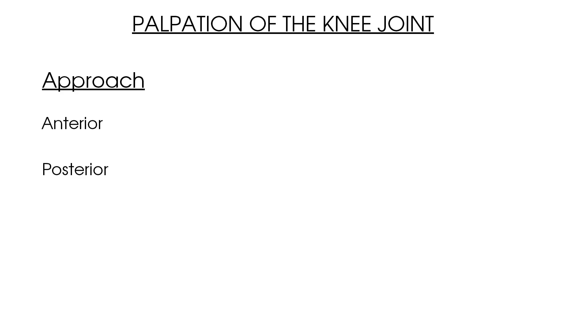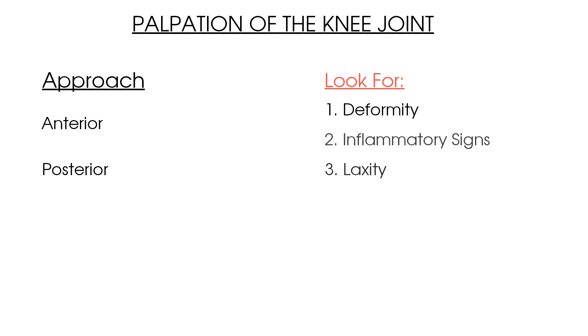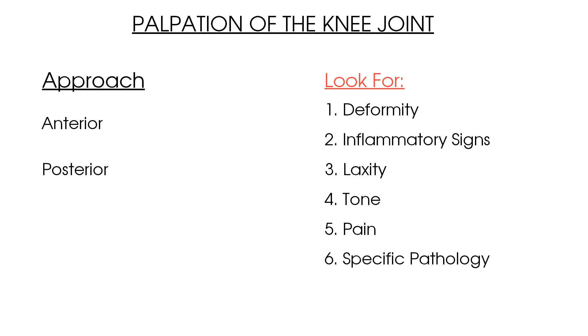Here are the key points to summarise this video on palpation of the knee joint: break down your palpation into an anterior and posterior view, ensuring you compare both the affected and unaffected sides. When palpating, look for deformity, swelling, laxity, tone and most importantly pain. You can also look for signs of specific pathology in each view as highlighted throughout the video. Next, have a look at our other videos within the knee catalogue here on Clinical Physio, including observation of the knee. Thank you for watching — we'll see you again soon right here on Clinical Physio.